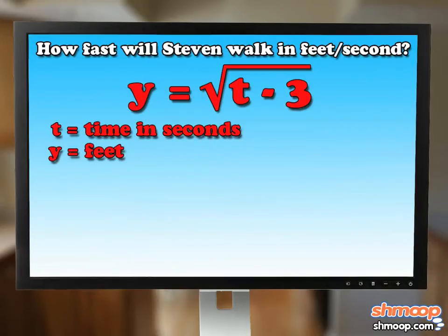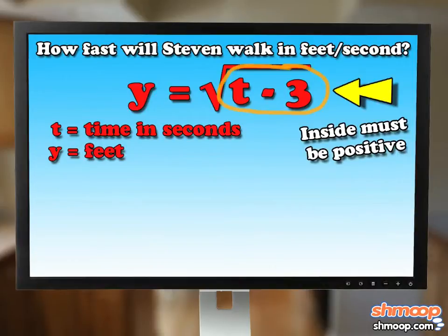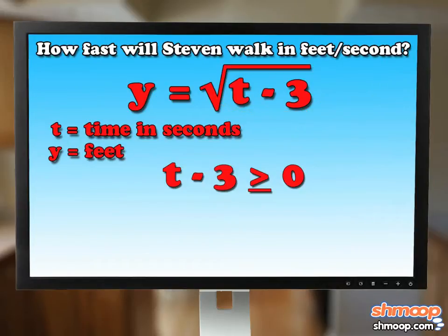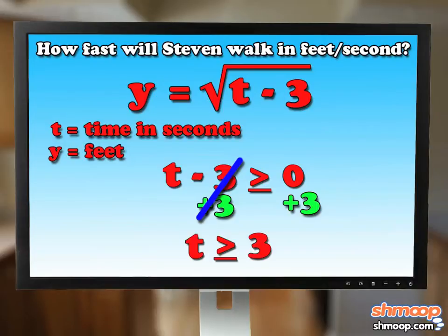To start, let's first check the domain of the equation, or what t values are possible that allow the function to work. Since we know the inside of a square root function can't be negative, we can set the inside of the equation, t minus 3, to be greater than or equal to zero. By adding three to both sides, we see that the possible t's of the function are all greater than or equal to three.